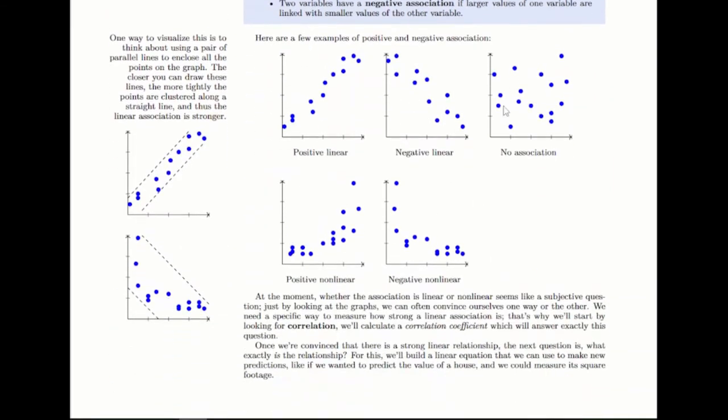So here's a few examples of some plots of different kinds of associations. Positive and negative linear ones, and then positive and negative non-linear ones. So these would be more like quadratic or exponential. And then here's one where there's just sort of random noise. There's not a clear association between the two.